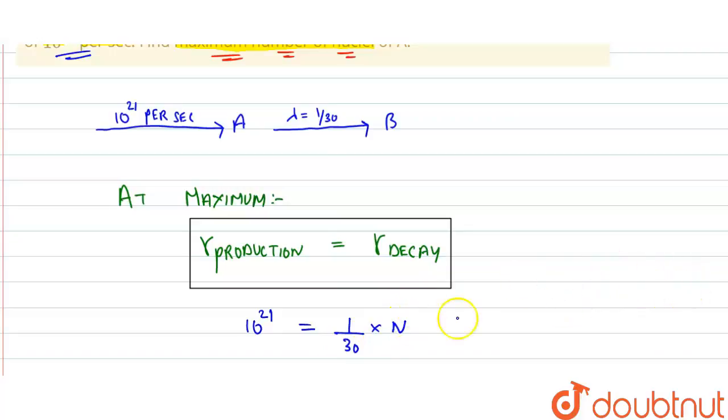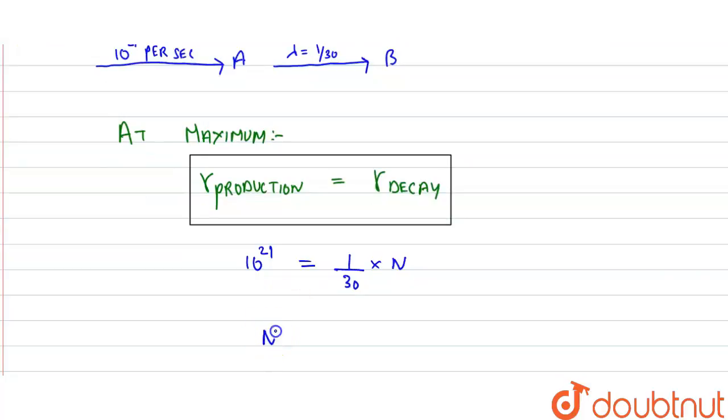We need to find the maximum number of nuclei N. By solving this equation, we get N equals 30 times 10^21.